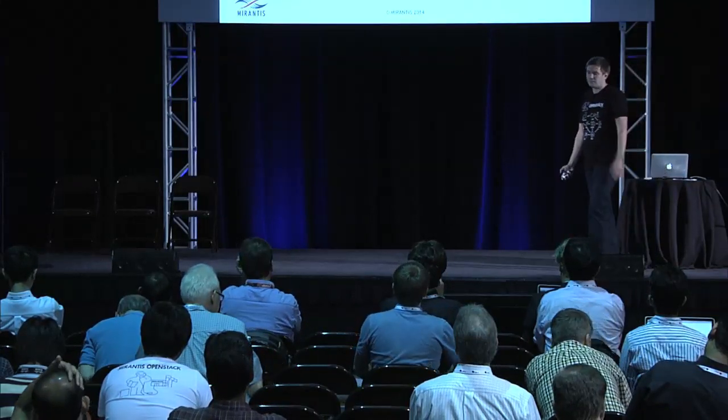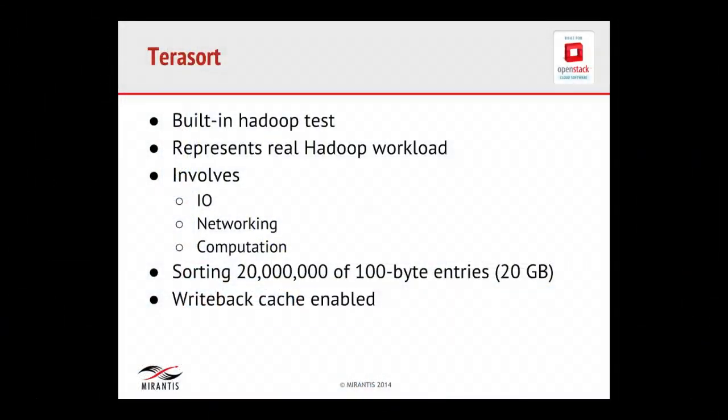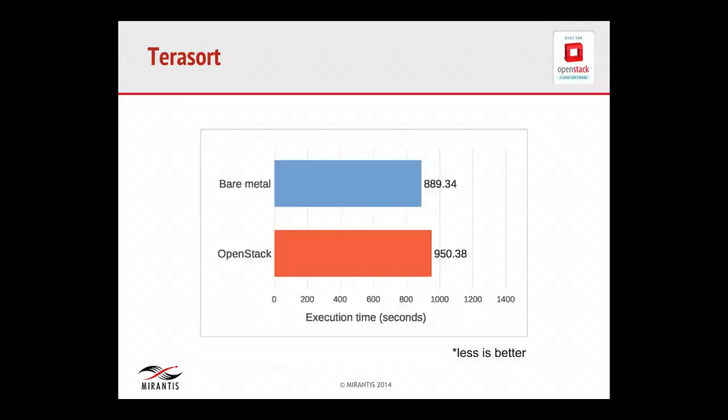That covered specific parameter impacts — but what about real-like scenarios? In the Hadoop distribution there is a Terasort job that represents real Hadoop workloads. It involves all kinds of calculations. Since intensive write is involved, I enabled write cache in OpenStack and tested the configuration with one large virtual machine per host. For this real-like workload, performance of Hadoop on OpenStack is only 6% slower than Hadoop on bare metal.